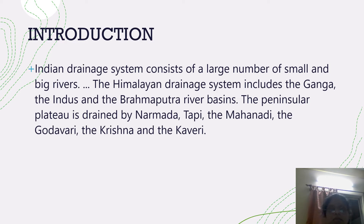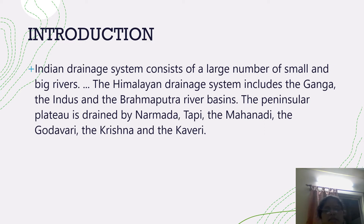In India, the Himalayan drainage system includes the Ganga, the Indus, and the Brahmaputra rivers. Then the peninsular rivers like the Narmada, Tapti, Mahanadi, Godavari, Krishna, and Kaveri — these rivers are very important.